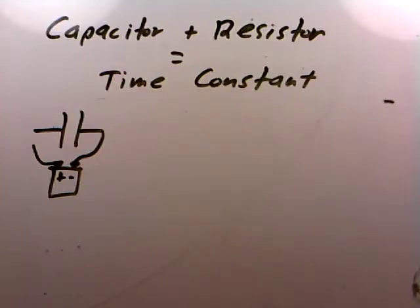Okay, so what we'd like to talk about in this video is what happens when we combine a capacitor and a resistor together in a circuit. And what we'll find out is we start getting something called a time constant.